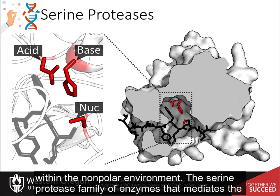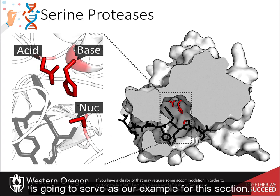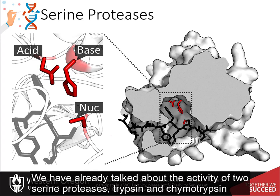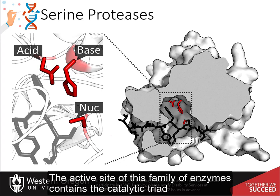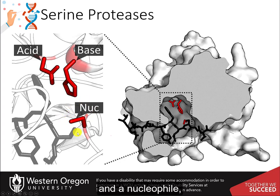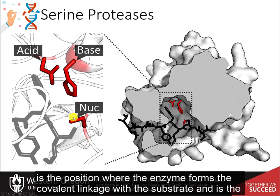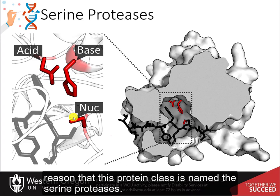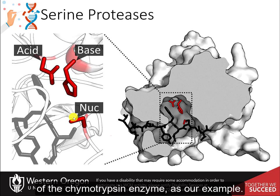The serine protease family of enzymes mediates the hydrolysis of proteins into smaller peptide units and will serve as our example for this section. We have already talked about the activity of two serine proteases, trypsin and chymotrypsin, during our discussion of techniques used to study proteins. The active site of this family contains a catalytic triad consisting of an acid — aspartic acid — a base — histidine — and a nucleophile, serine. The serine residue is where the enzyme forms a covalent linkage with the substrate, which is the reason this protein class is named the serine proteases.